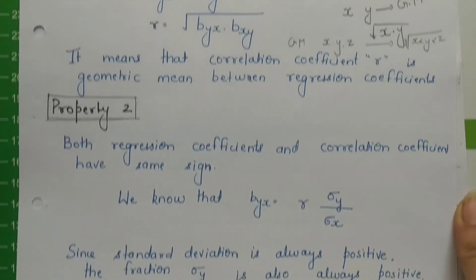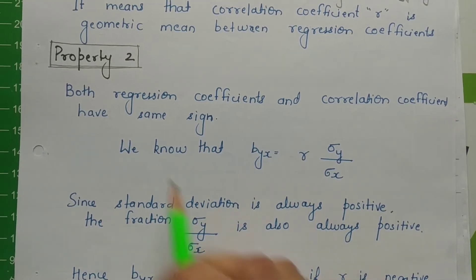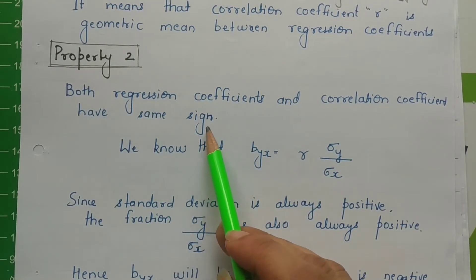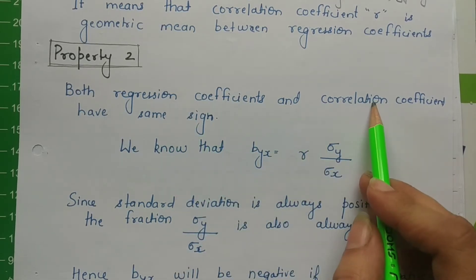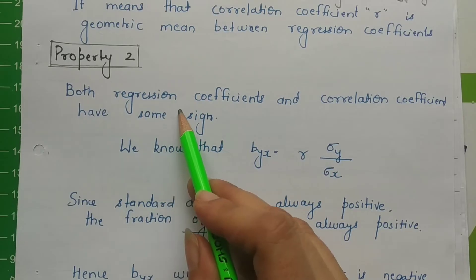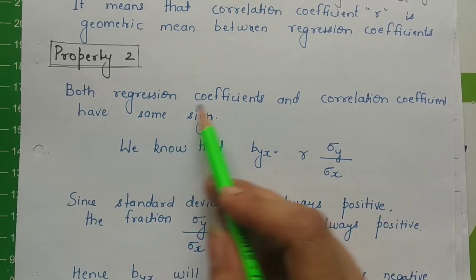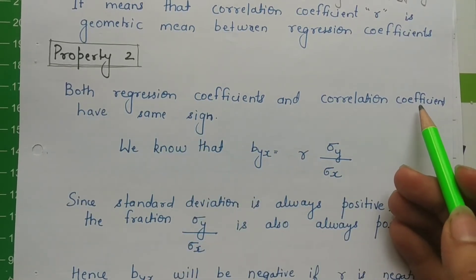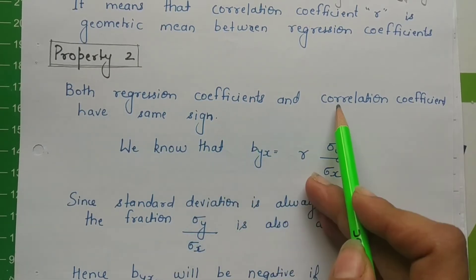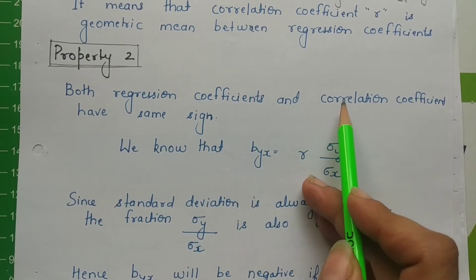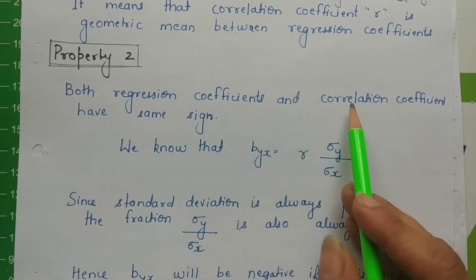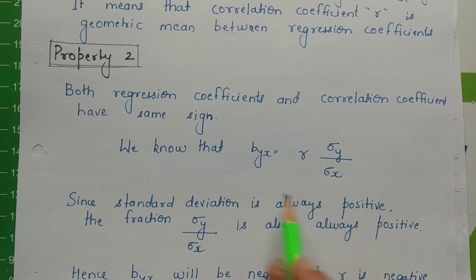Now talking about property 2: both regression coefficients and the correlation coefficient have the same sign. Whatever sign the correlation coefficient has, the regression coefficients will have the same sign, and vice versa. If the regression coefficients are negative, the correlation coefficient will also be negative. If the regression coefficients are positive, the correlation coefficient will also be positive.